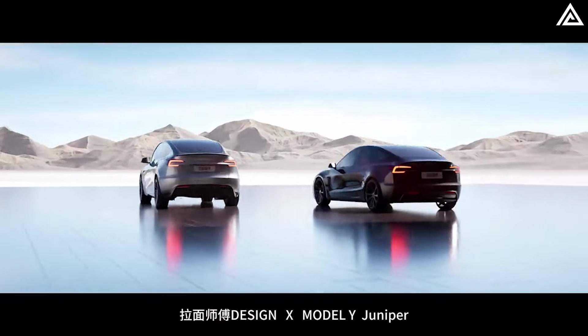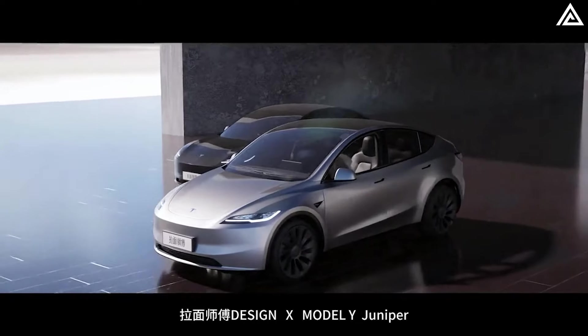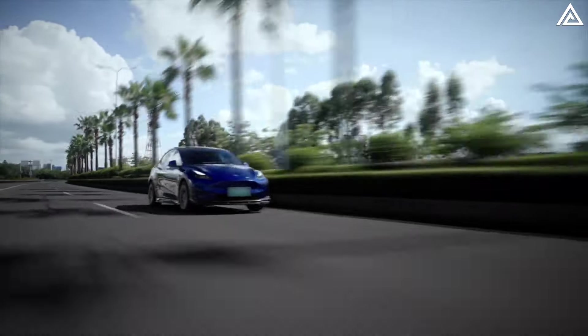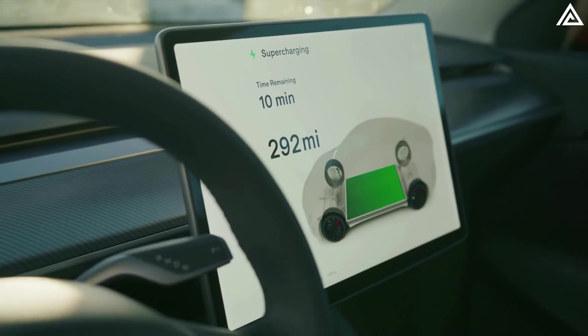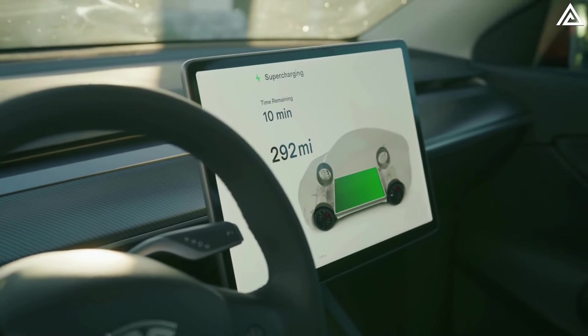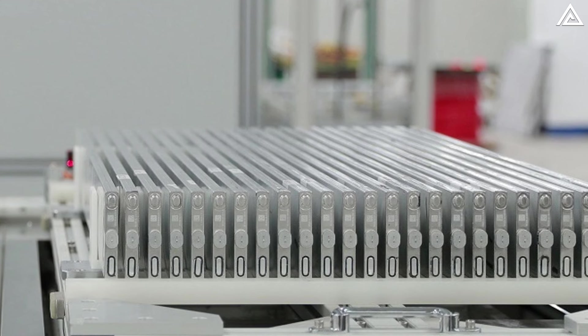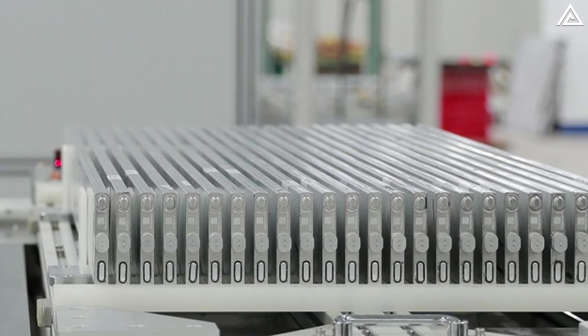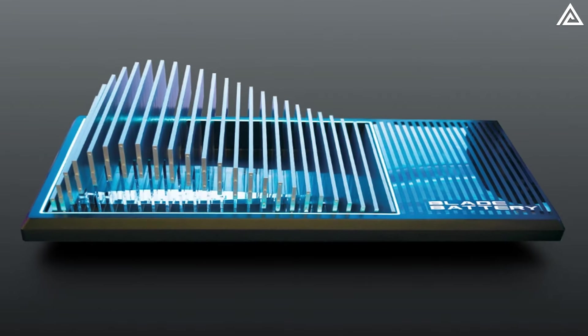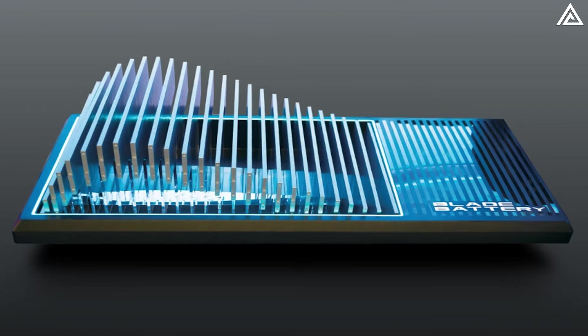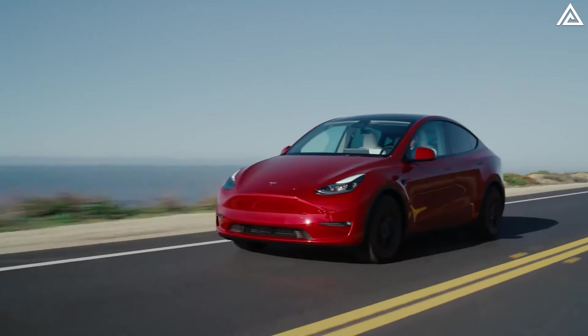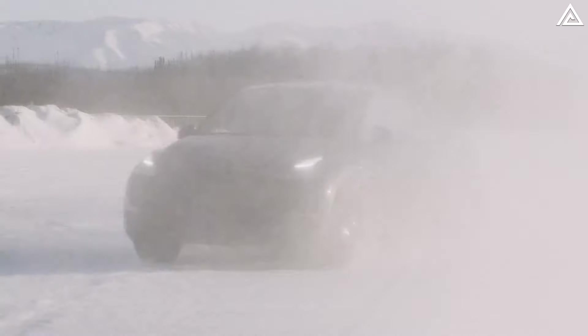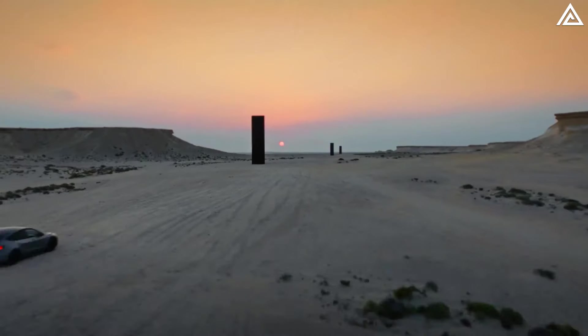If BYD's second-generation blade battery were applied to the 2025 Tesla Model Y, it could dramatically enhance the vehicle's range, charging speed and performance compared to the current Model Y. The new blade battery 2.0 offers an energy density of 190 Wh per kilogram, up from the previous 150 Wh per kilogram. This density boost alone could allow the Model Y to cover nearly 1,000 kilometers, about 620 miles, on a single charge.